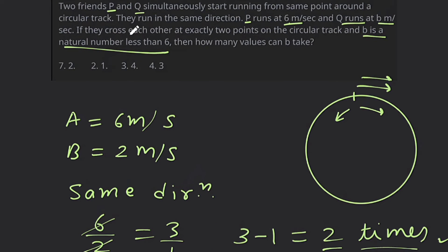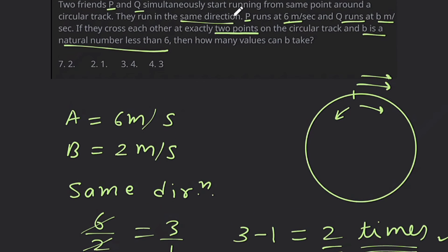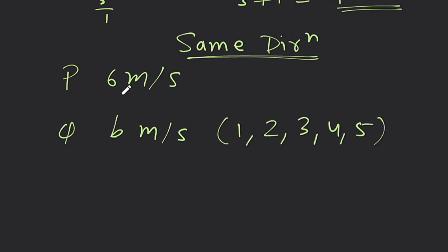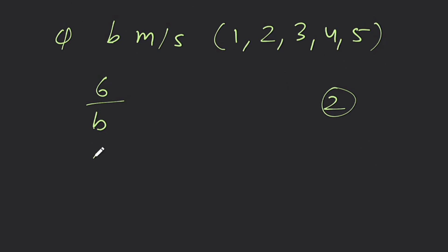Meeting points: it is given that they cross each other at two points. They are moving in the same direction, so this is a same-direction case. In the same direction, relative speed is subtracted. For speeds 6 and B, the difference of the simplified ratio should equal 2. Taking B=1: ratio is 6:1, difference is 6 minus 1 = 5, so they meet 5 times — this is incorrect.